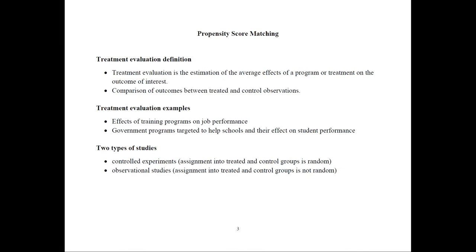There are two types of studies. The first is controlled experiments, where assignment into treated and control groups is random — like lab experiments where one group gets the treatment and another gets the placebo. But real life and collected data are usually not like that.